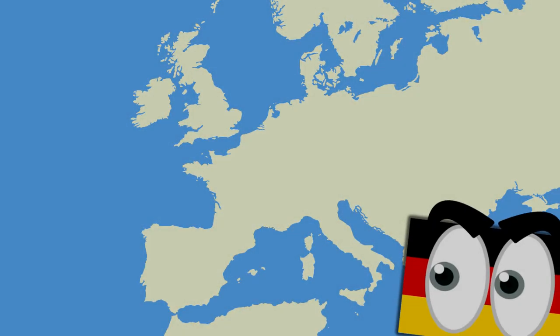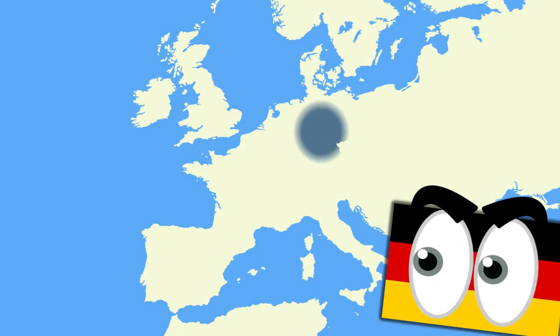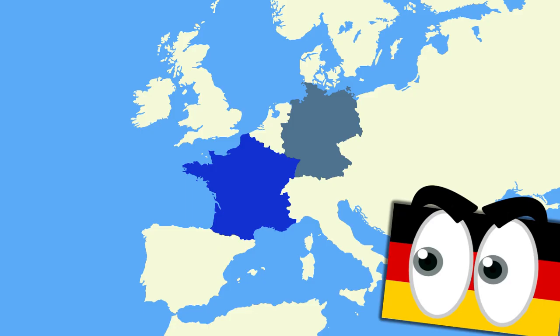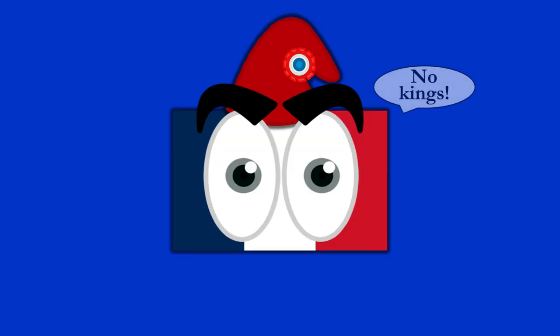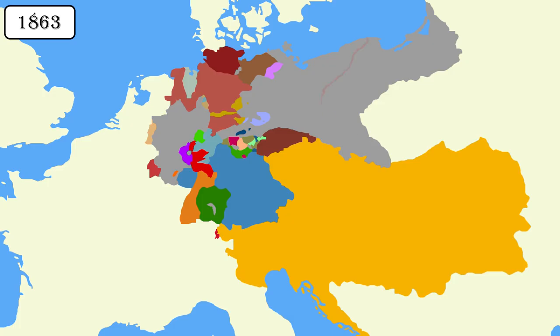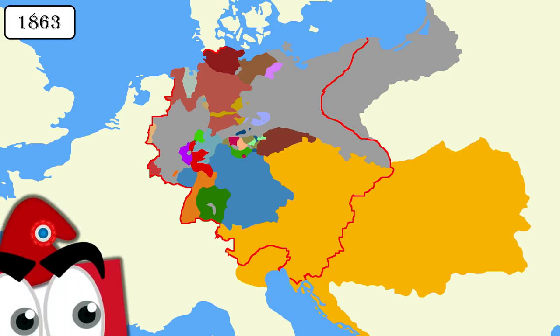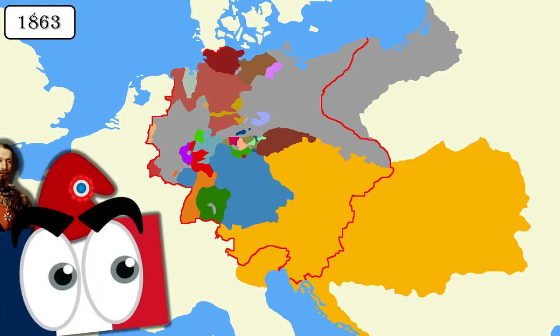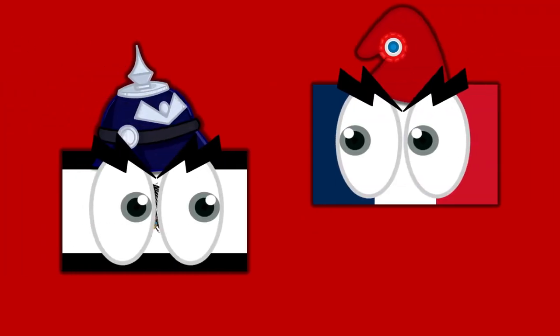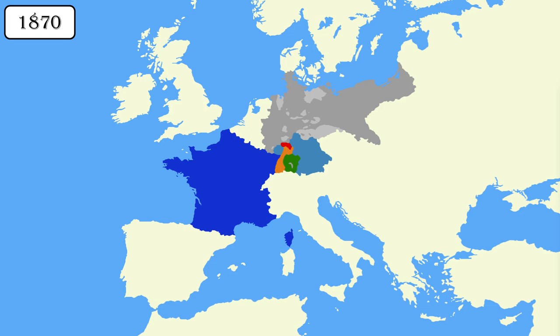Today, Germany is a single, unified nation, and its western neighbour, France, is a republic. But there was a time when the Germans lived under several different rival states, and when the French were ruled by an emperor. So what was it that caused the conflict which brought about those two dramatic changes — the Franco-Prussian War?